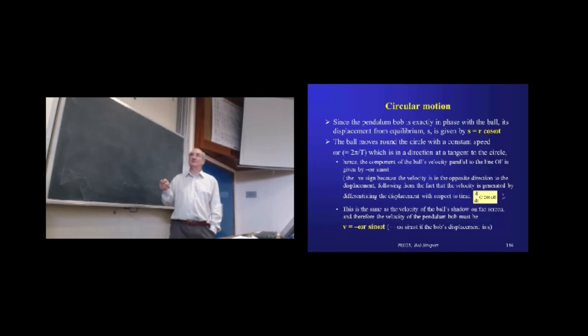So, if I differentiate that with respect to time, what I'm going to get is, here it is. So, the velocity with which our pendulum bob is moving is now given by a relatively simple equation as well. And you'll notice this is also a sinusoidal wave. So, the velocity of our pendulum bob is itself varying sinusoidally with time.